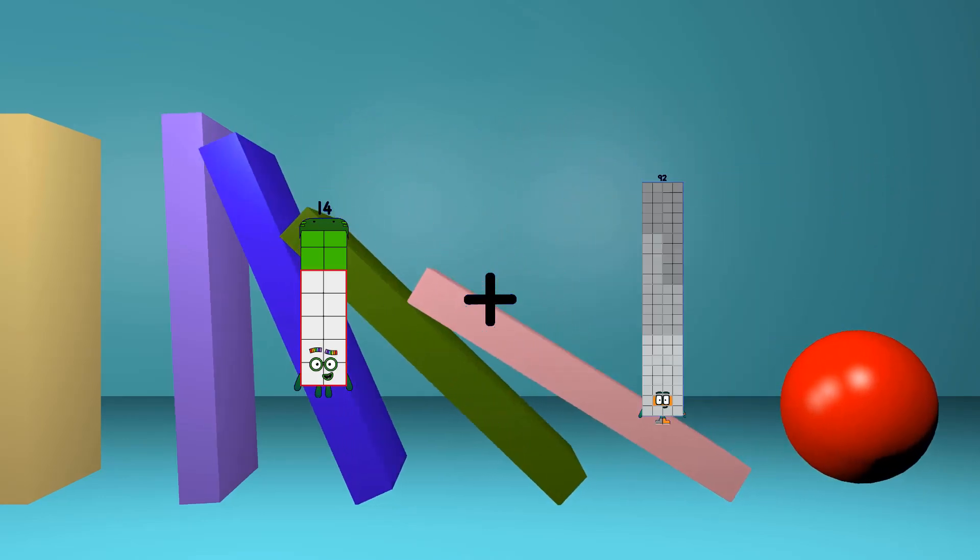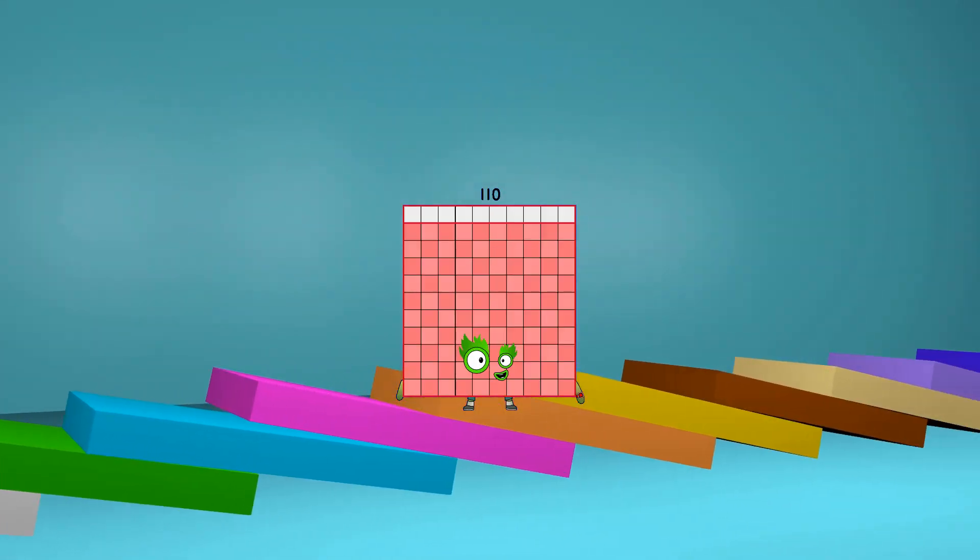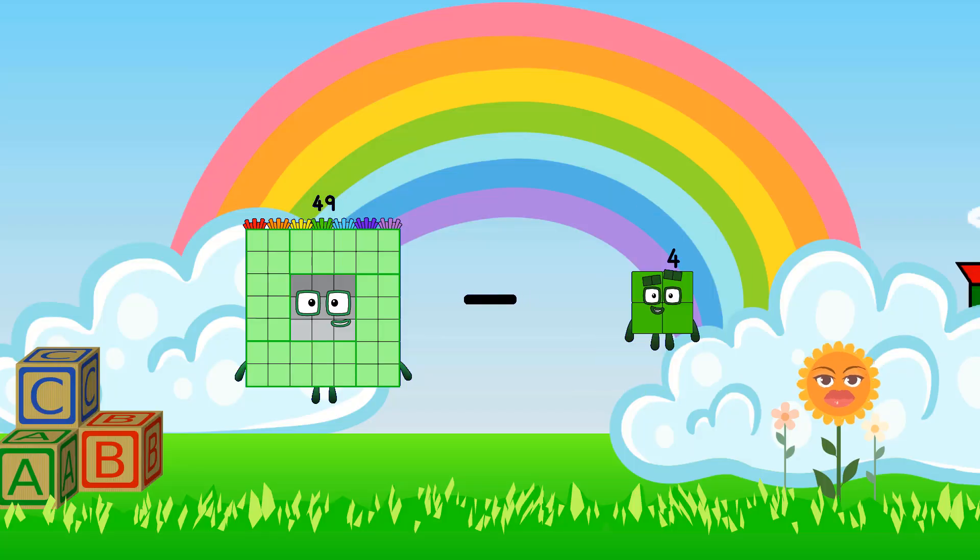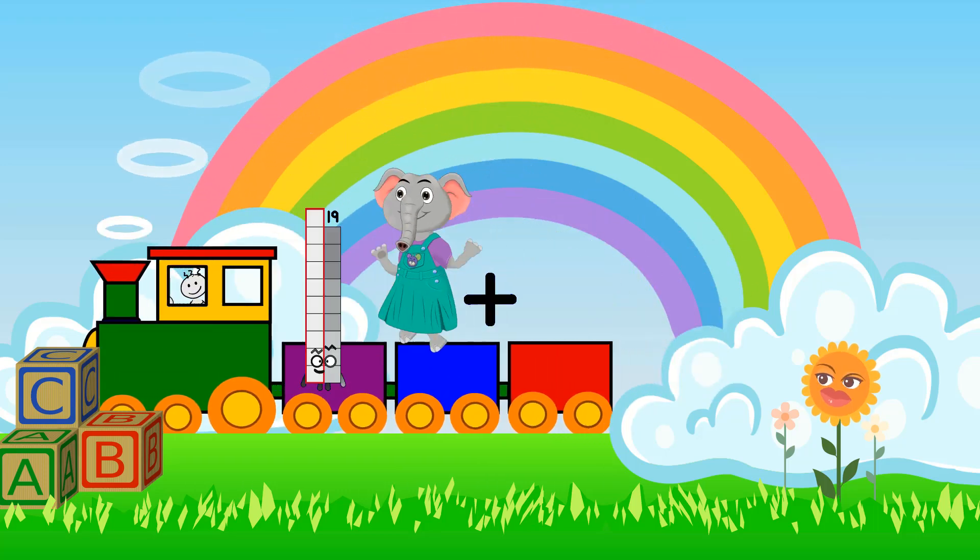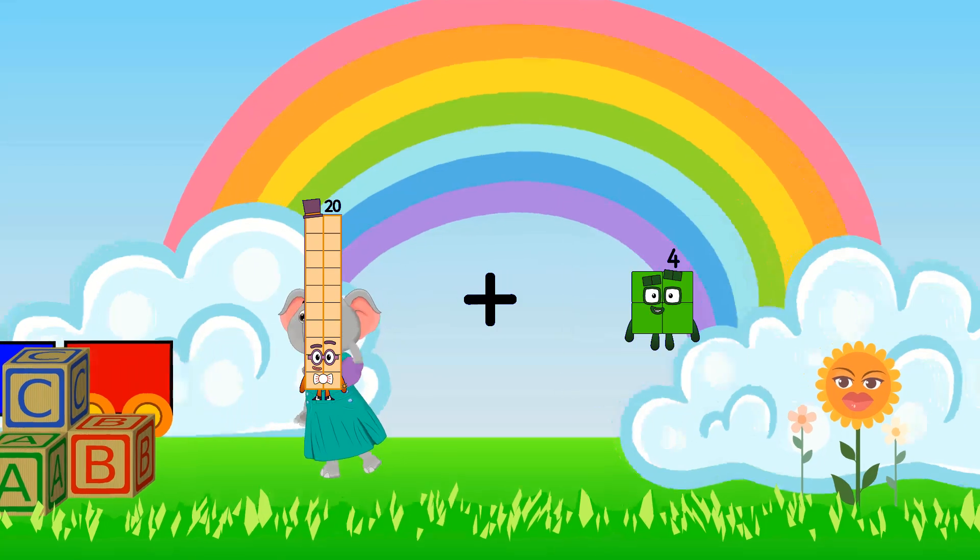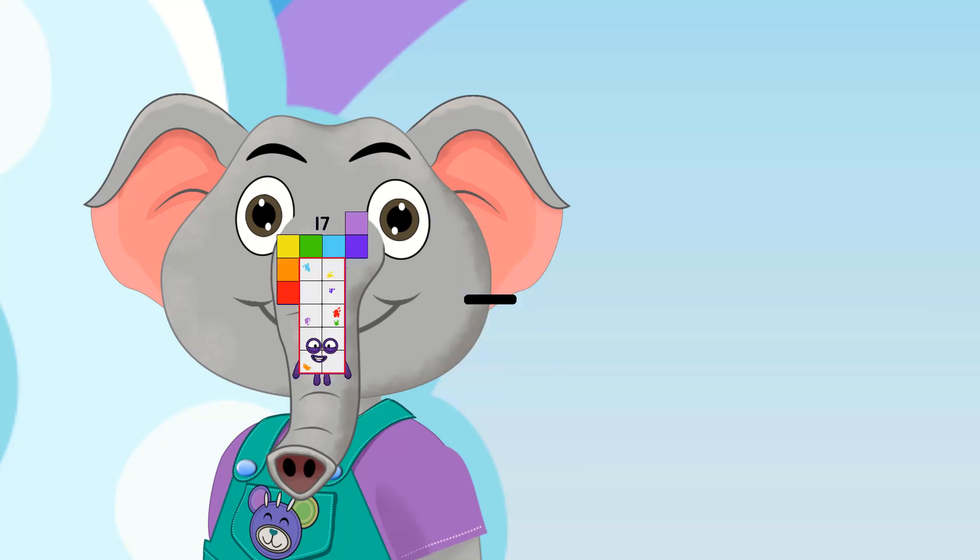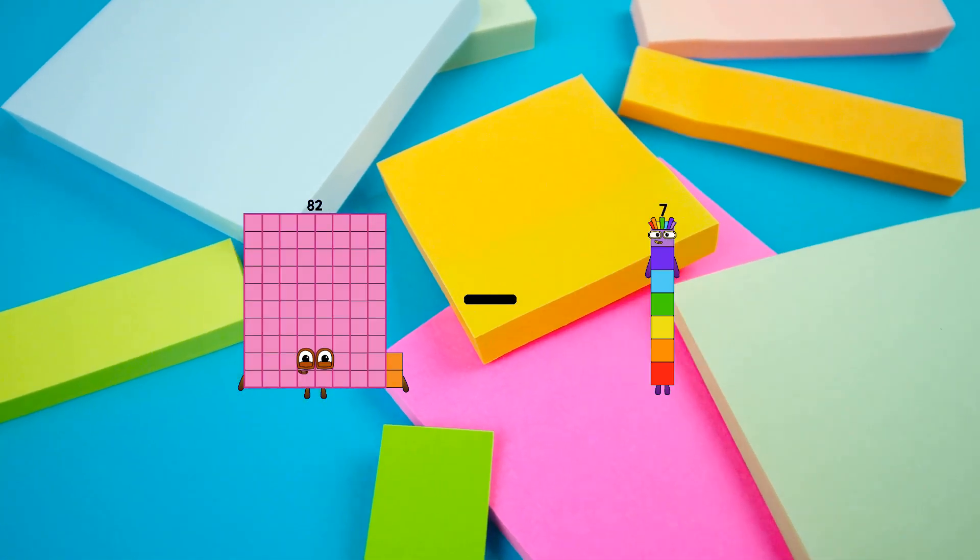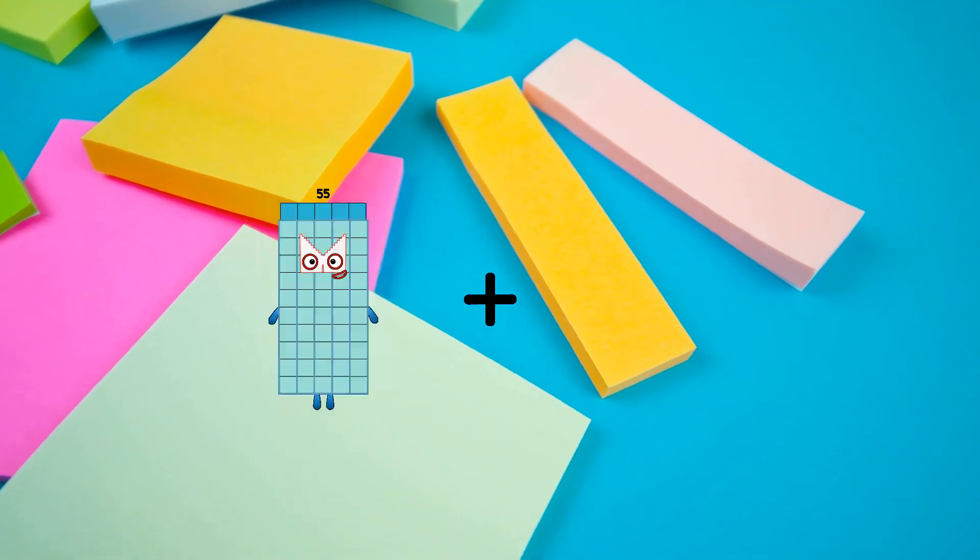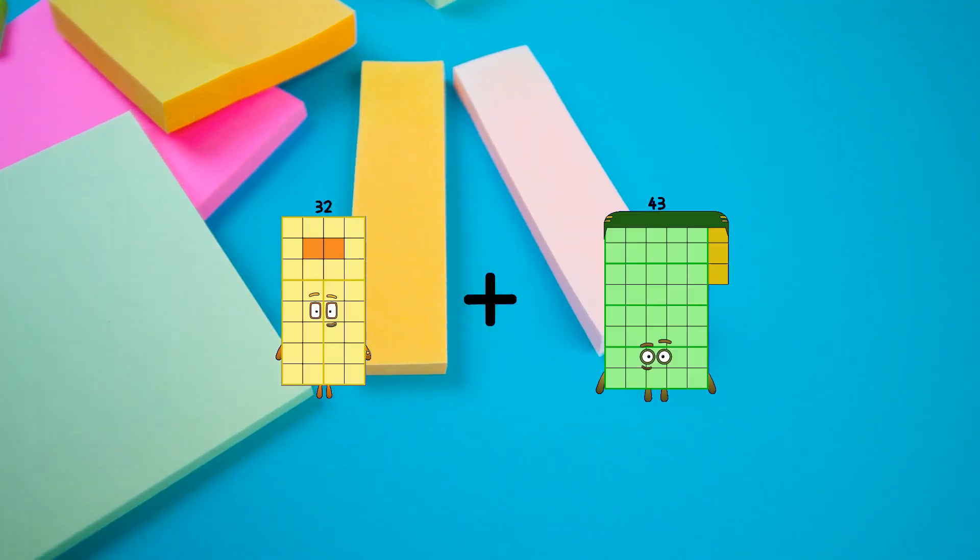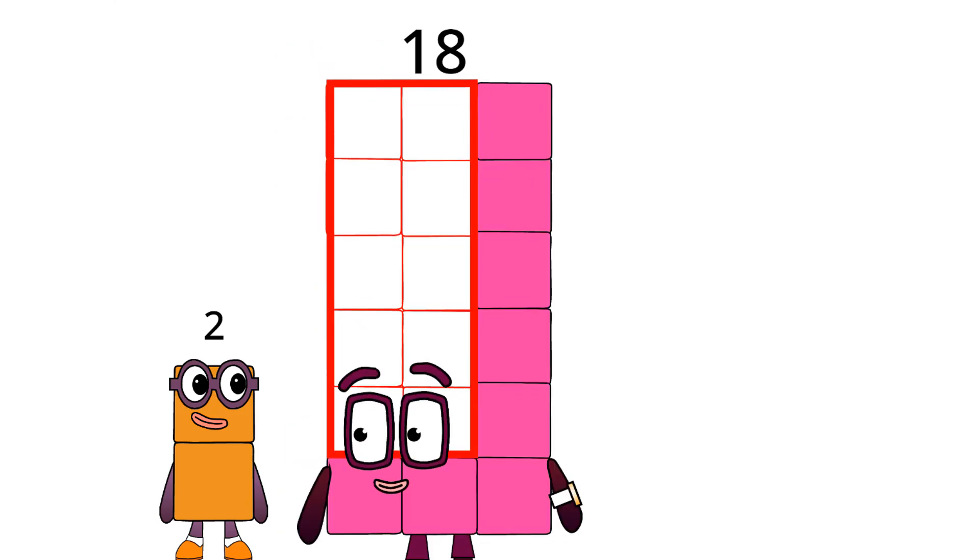14 plus 96 equals 110. 49 minus 49 equals 0. 20 plus 42 equals 62. 82 minus 30 equals 52. 32 plus 31 equals 63. 2.